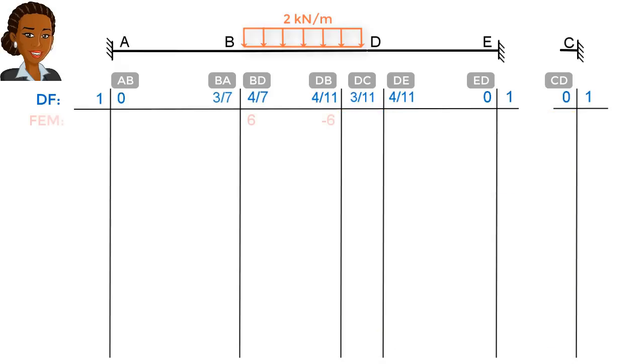Here are the fixed-end moment values. Now we can begin the moment distribution process. Let's start by balancing joint D. We need a moment of 6 kNm to balance the joint. This value needs to be distributed among the three members according to the distribution factors, like this.